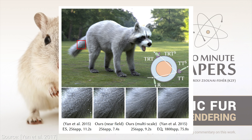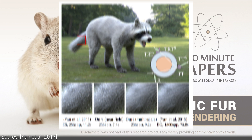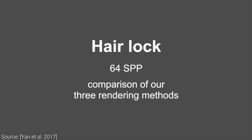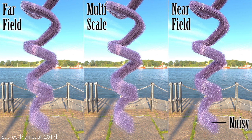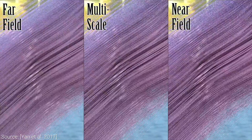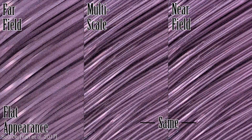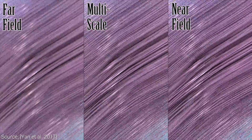This new technique enables us to get the most out of our samples, and if we render an image with 256 SPP, we get a roughly equivalent quality to a previous technique using around six times as many samples. If we had a film studio, and someone said we can render the next Guardians of the Galaxy film six times cheaper, we would surely be all over it. This would save us millions of dollars.